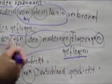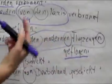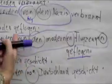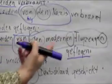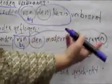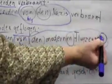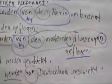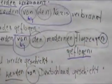And this is a dative plural with an adjective in it. So von den modernen Flugzeugen — the noun takes -en in dative plural — geflogen.